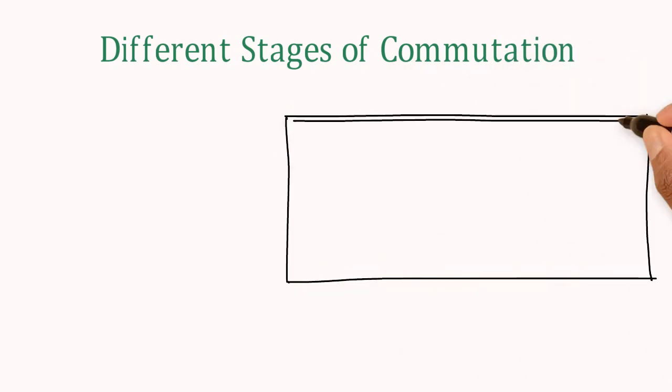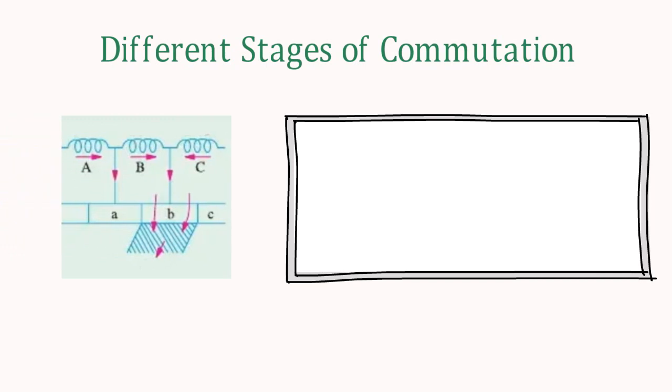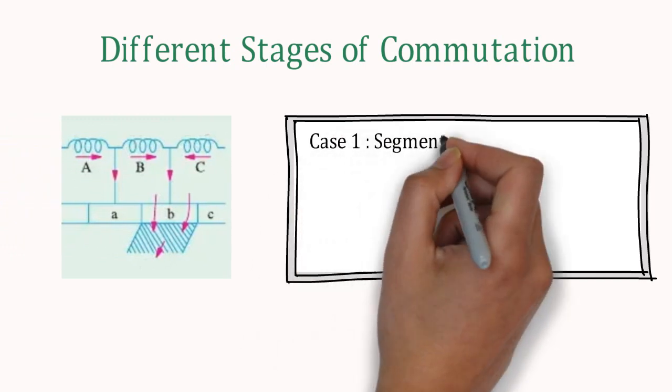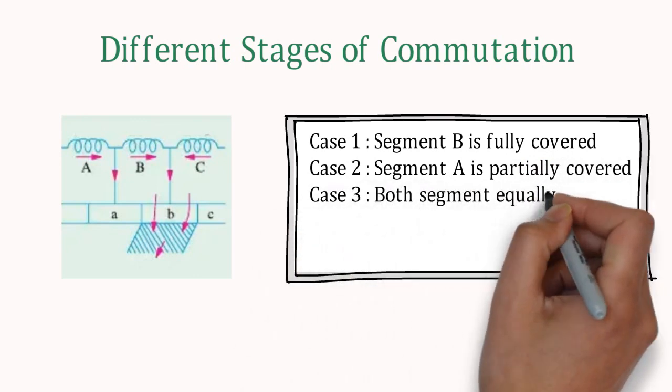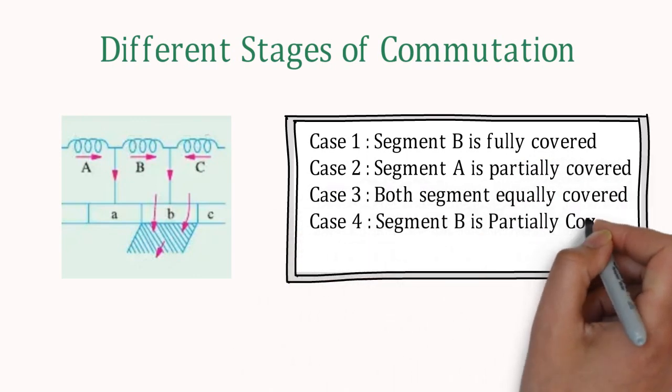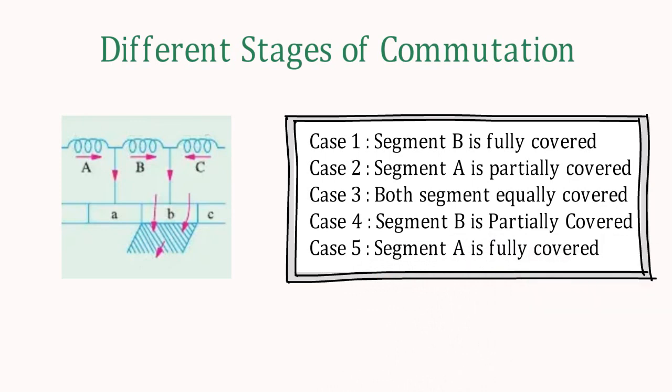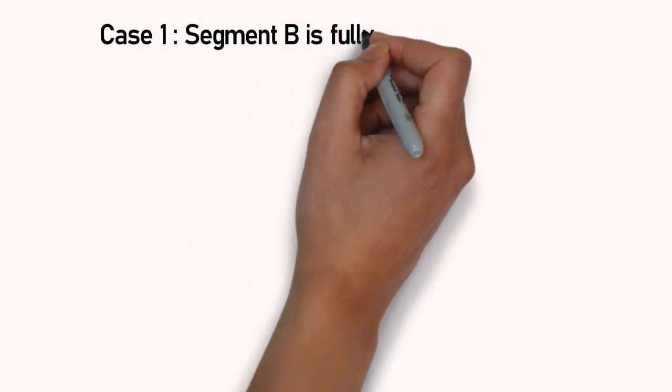And those are: case 1, commutator segment B is fully covered. Second case is, segment A is partially covered. In third case, both commutator segments are equally covered. Case 4 is, segment B is partially covered. And final case, when segment A is fully covered. Let's start with case 1.